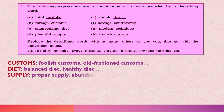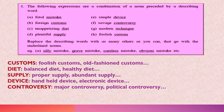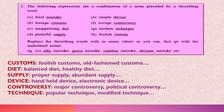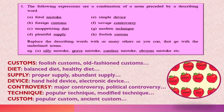Supply could be 'proper abundant supply.' Device could be a 'handheld device' or 'electronic device.' Similarly, we can substitute adjectives with controversy, technique, and custom. We also have another example where adjectives are used to describe apples.